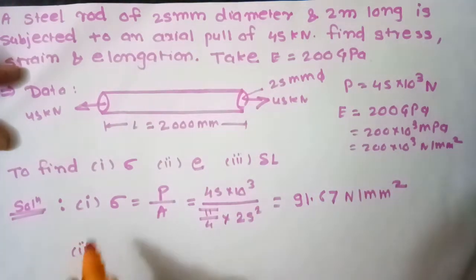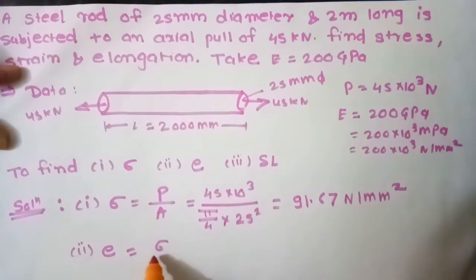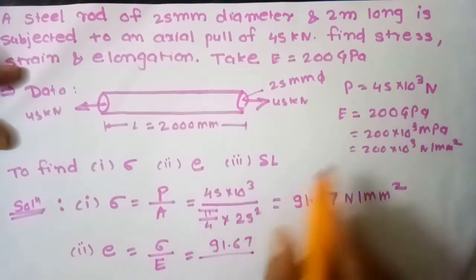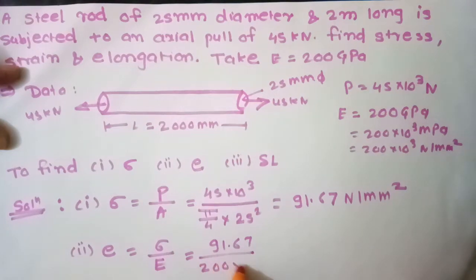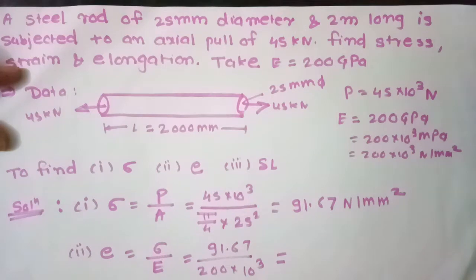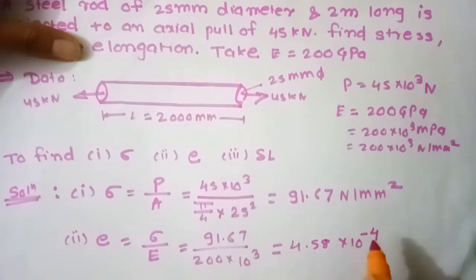Second, strain. E, Young's modulus, equals stress upon strain. Stress 91.67, Young's modulus 200 into 10 raised to 3. Therefore, 4.58 into 10 raised to minus 4, unitless.